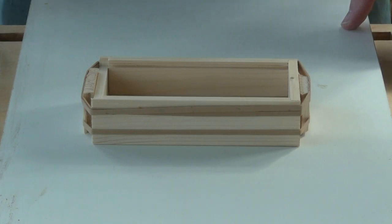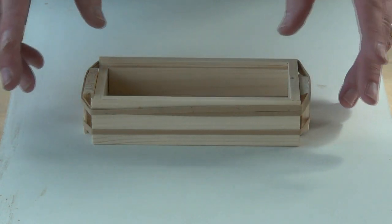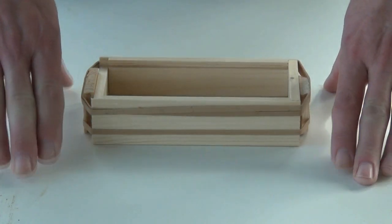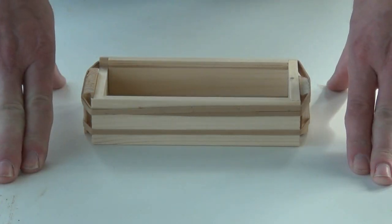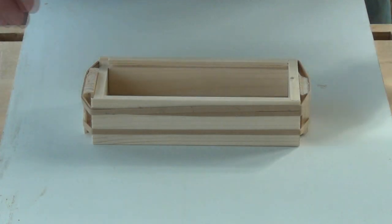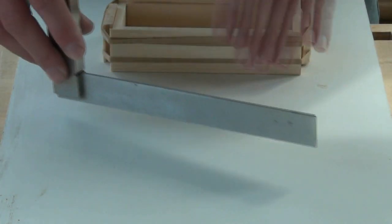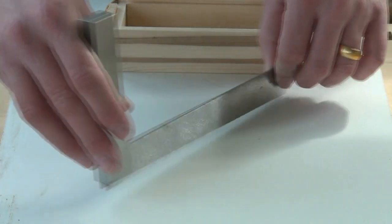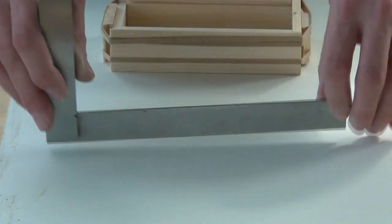For gluing the main box up, do a practice run, work out how you're going to clamp it, and get yourself something nice and flat, like this piece of melamine coated chipboard. That's not always flat by the way, so check it with a straight edge, a few different angles, just to make sure there are no gaps underneath and no bumps.